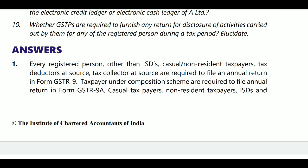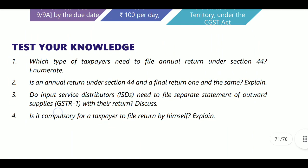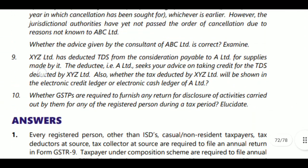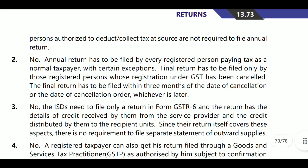Second question: is annual return under Section 44 and final return one and the same? No, they are not the same. Annual return is different from final return. Final return is filed whenever you are closing the business — that is the final filing, and you will not file any return after that.